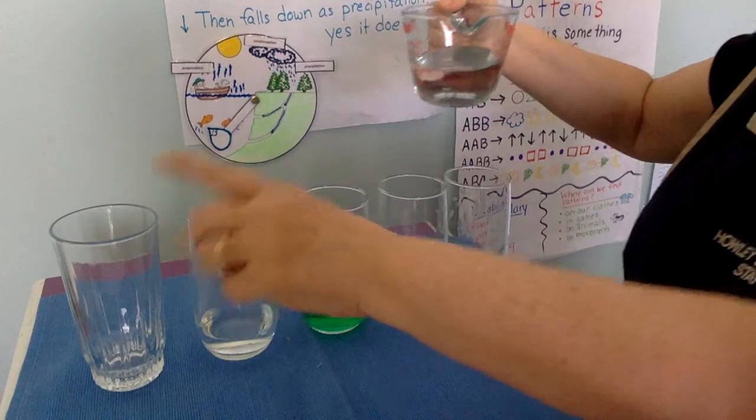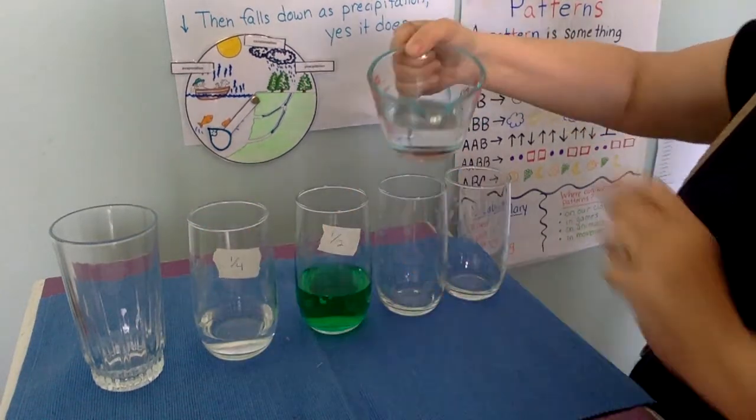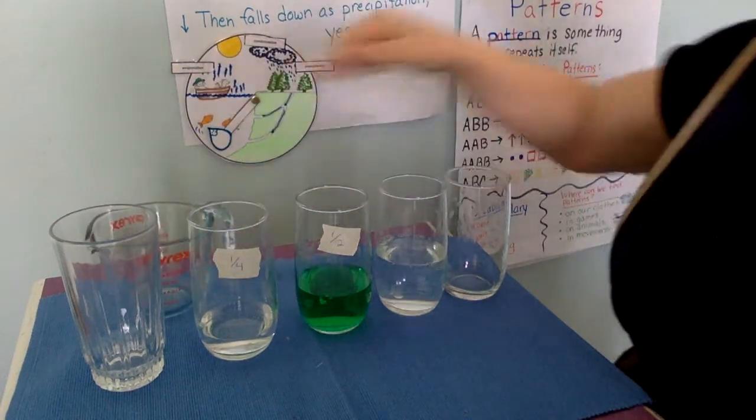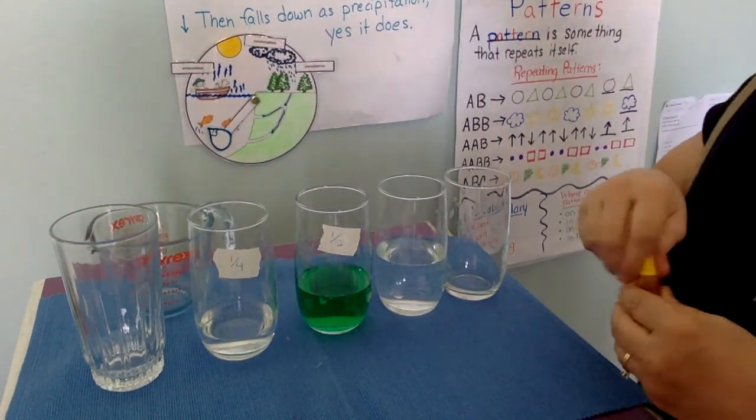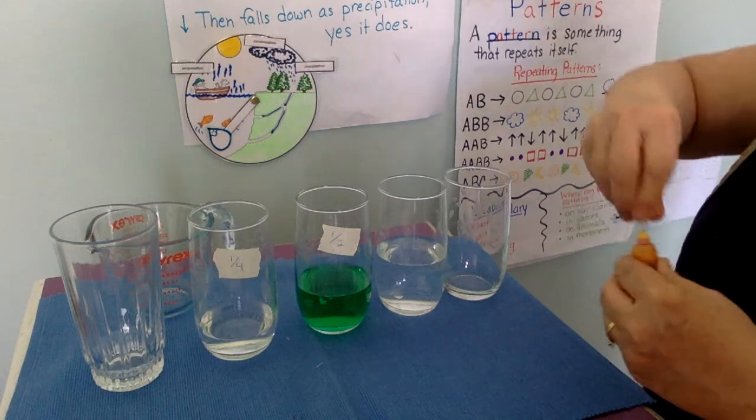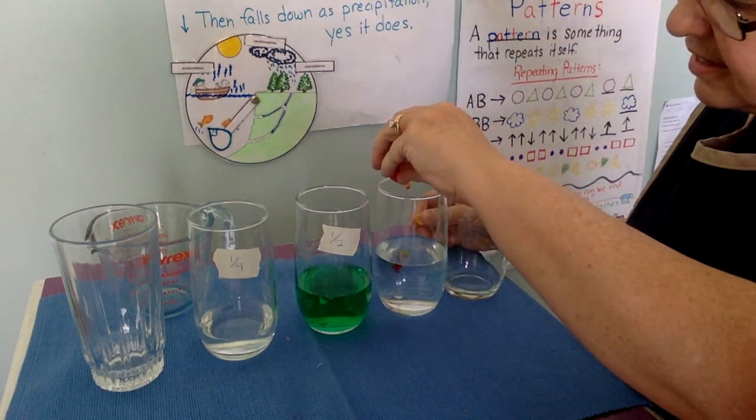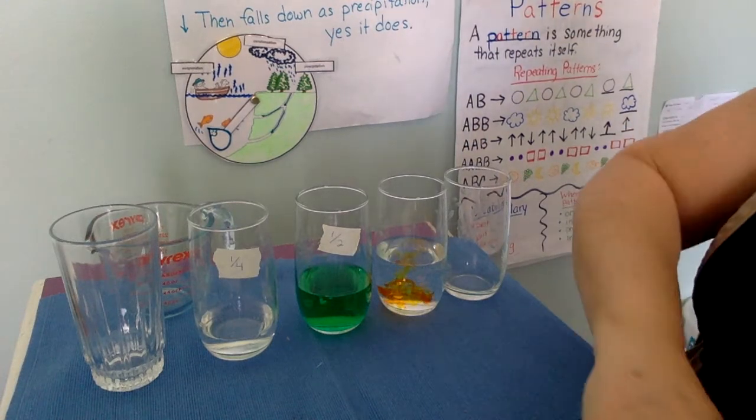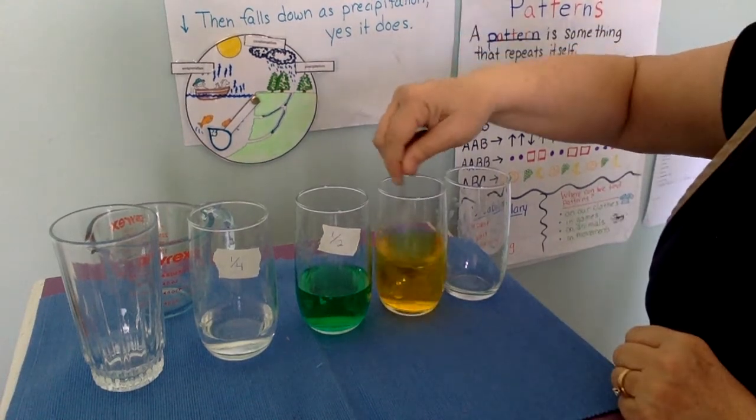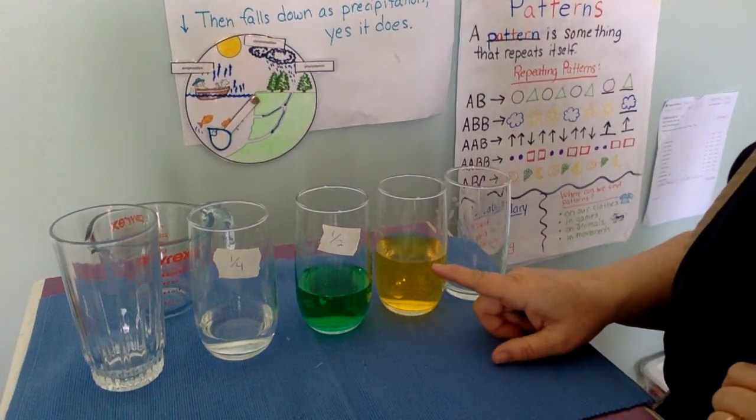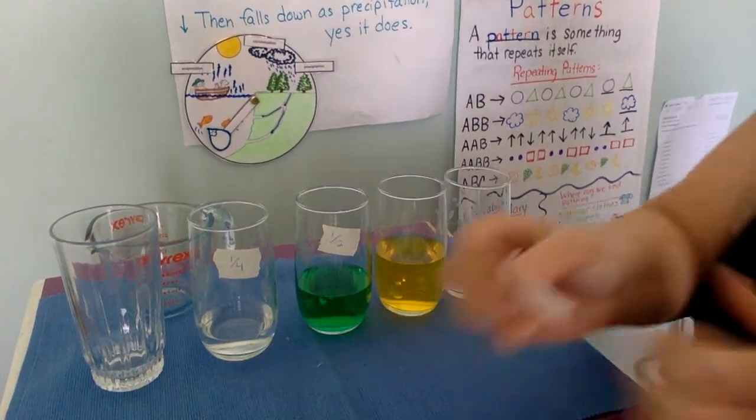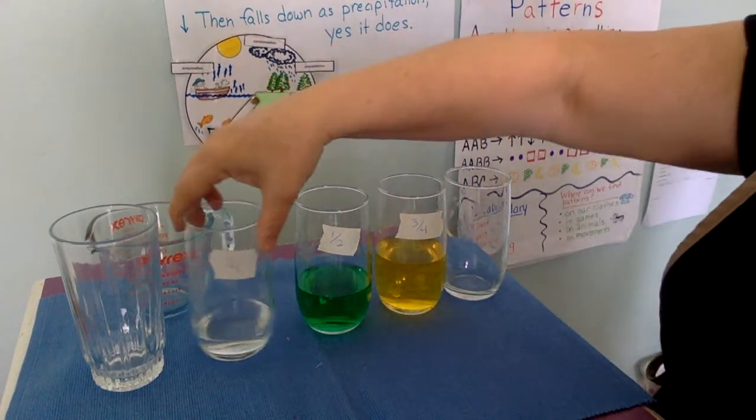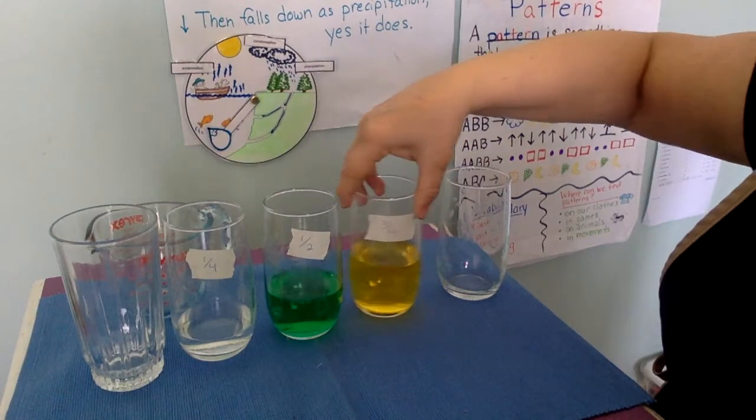And I'm going to pour that into the one, two, three, four glass. And now I'm going to color this one too so you can see it better. It's a little bit higher. And I also have a label, three quarters. I'll remember. A quarter, a half, three quarters.